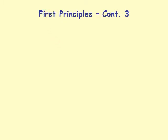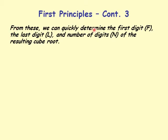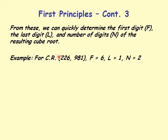From these principles, we can quickly determine: the first digit (f), the last digit (l), and the number of digits (n) of a resulting cube root. So for the cube root of 226,981 — two blocks of 3 digits, so n = 2. Since 226 is between 6 cubed (216) and 7 cubed (343), the first digit f is 6. From the last digit 1, the last digit of the cube root is also 1.